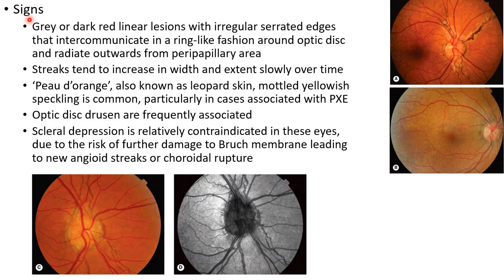Now let us discuss about the signs of angioid streaks. There will be gray or dark red linear lesions with irregular serrated edges that intercommunicate in a ring-like fashion around the optic disc and radiate from the peripapillary area. These streaks tend to increase in width and extend slowly over time. There can also be peau d'orange appearance, which is a mottled yellowish speckling.